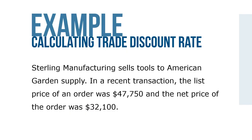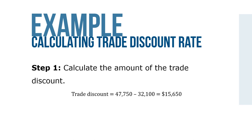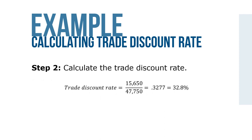Here's an example. Sterling Manufacturing sells tools to American Gardens Supply. In a recent transaction, the list price of an order was $47,750 and the net price was $32,100. Step 1: the trade discount equals $47,750 minus $32,100, which is $15,650. Step 2: the trade discount rate equals $15,650 divided by $47,750, which equals 0.3277, or 32.8%.